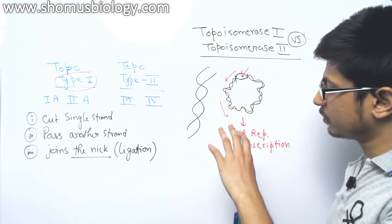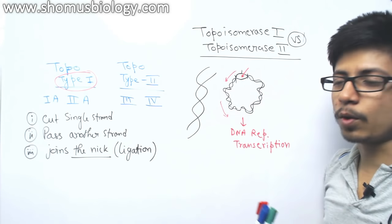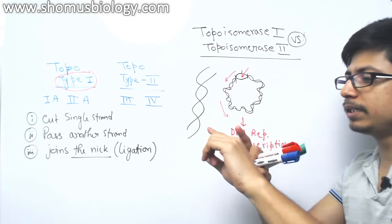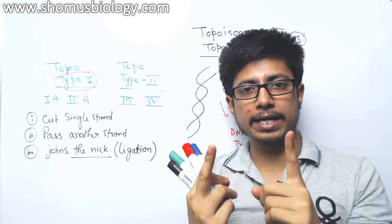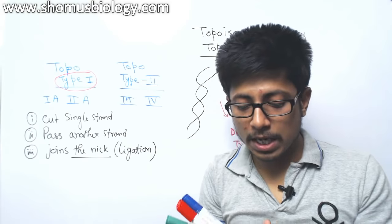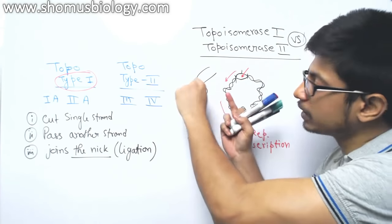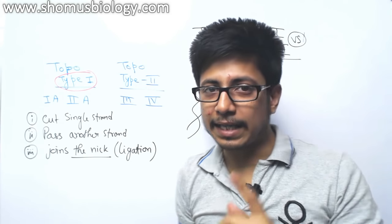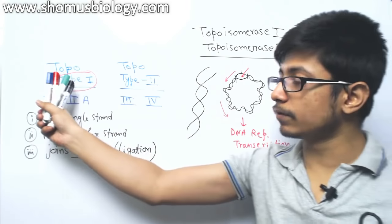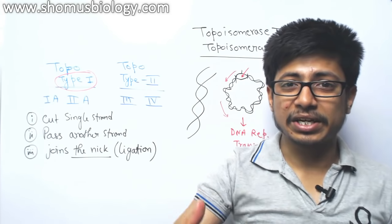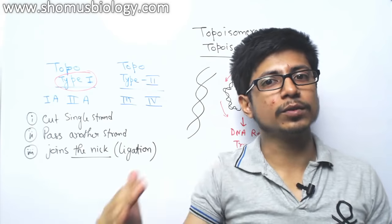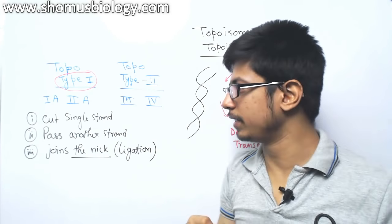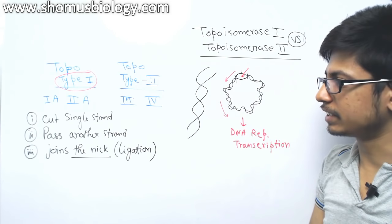In a bacterial cell, topoisomerase type 1 functionality mostly involves releasing negative supercoiling. Supercoiling means that knot that is formed when coiled DNA is further twisted. Topoisomerase type 1 releases the tension of negative supercoiling by one unit at a time, because it cuts only one strand.